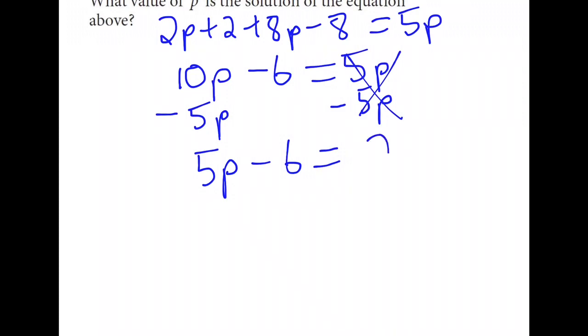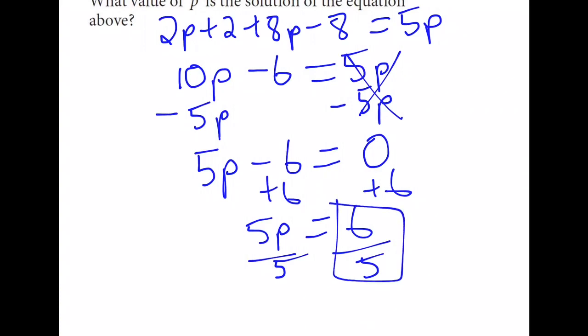Remember, there's actually a zero on that side of the equation. So when we add 6 to both sides, we get that 5p is equal to 6. And when we divide both sides by 5, our final answer is 6 fifths.